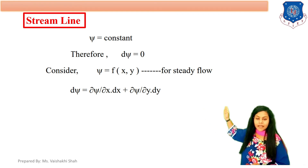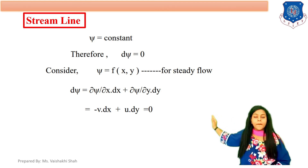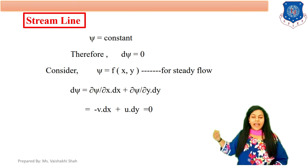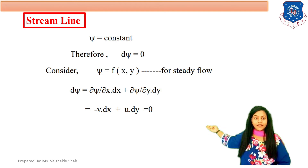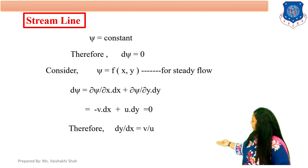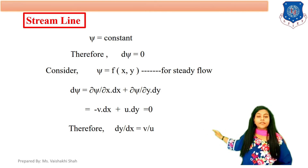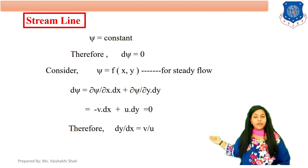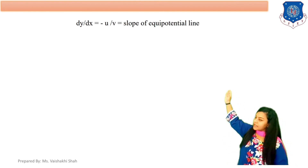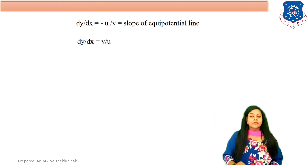So the equation becomes: minus v into dx plus u into dy equals 0. Making dy by dx the subject, which is the slope of the streamline: dy by dx equals v by u. For the equipotential line the slope was minus u by v, and for the streamline the slope is v by u.